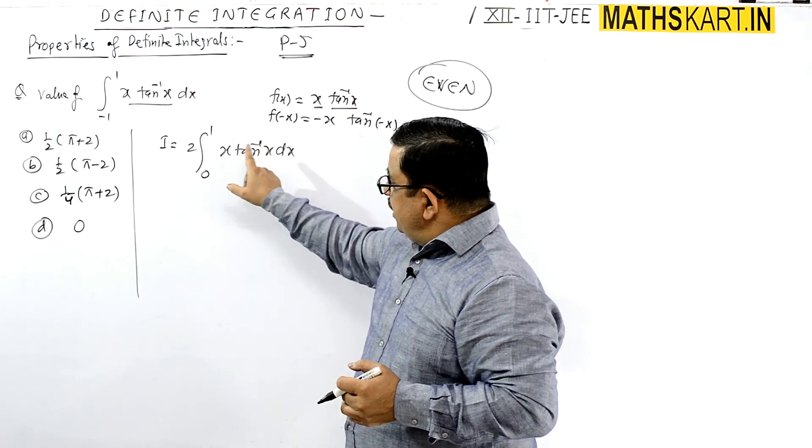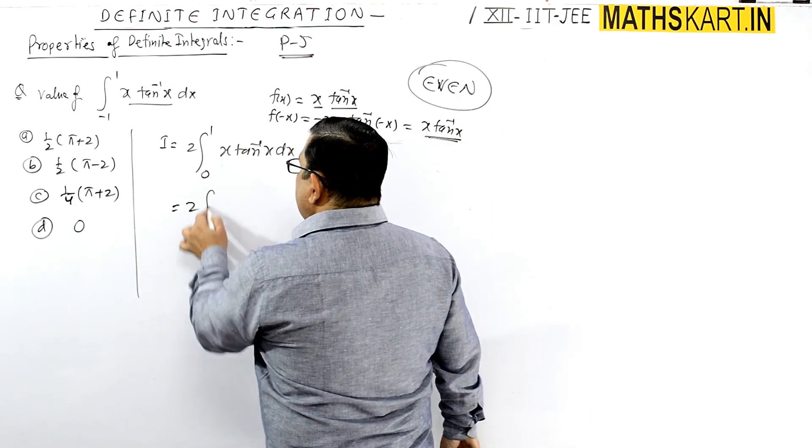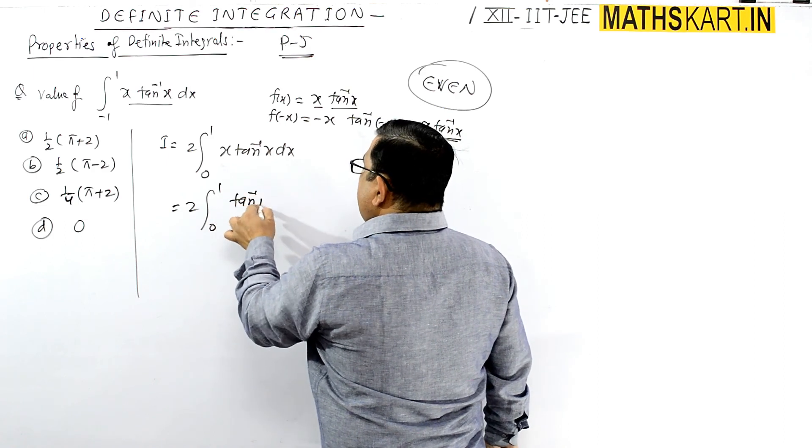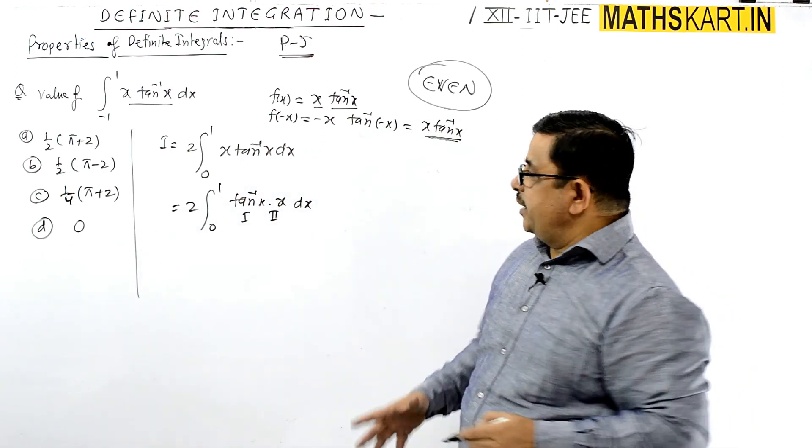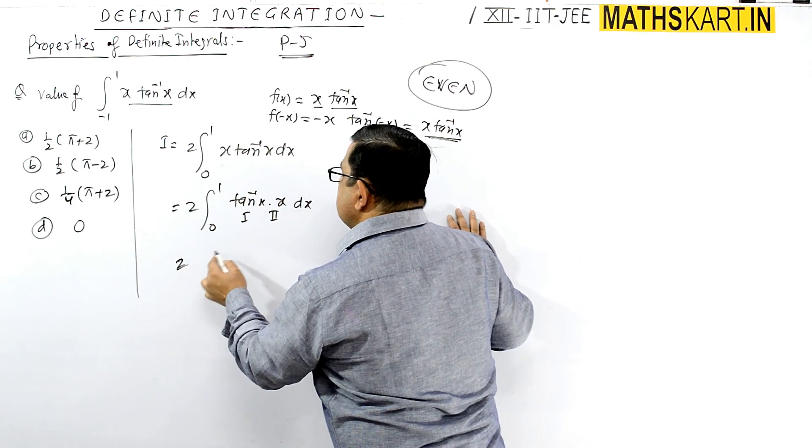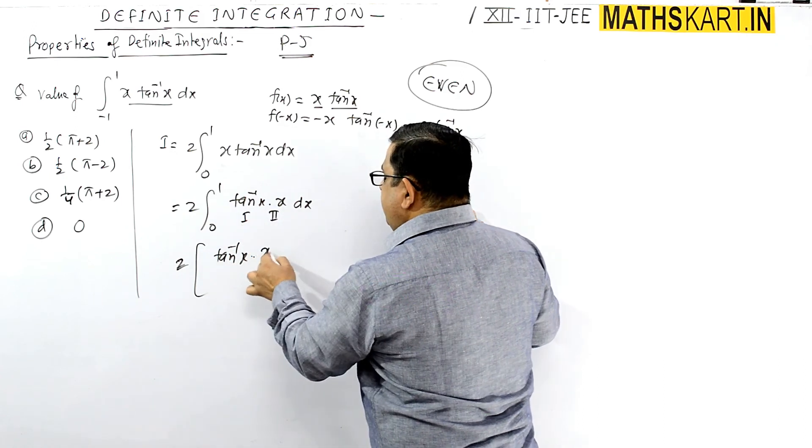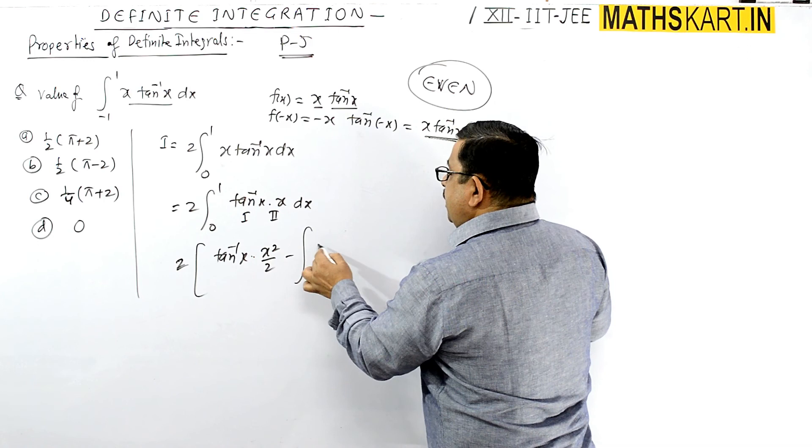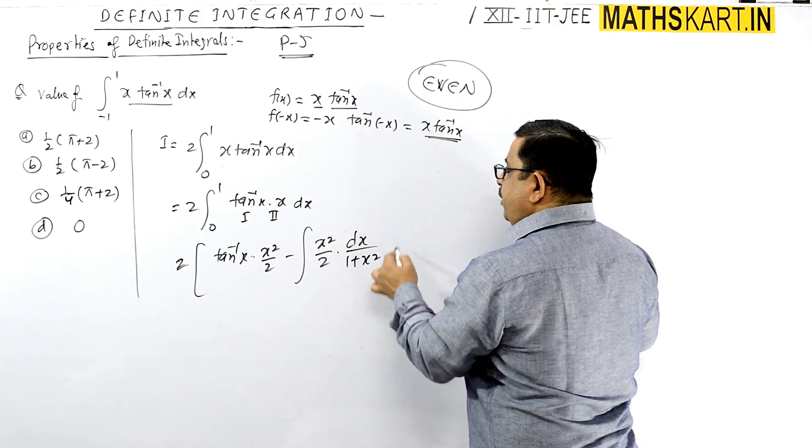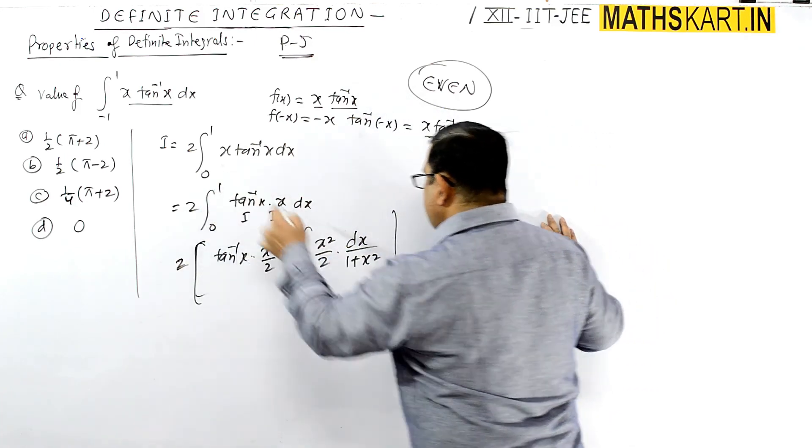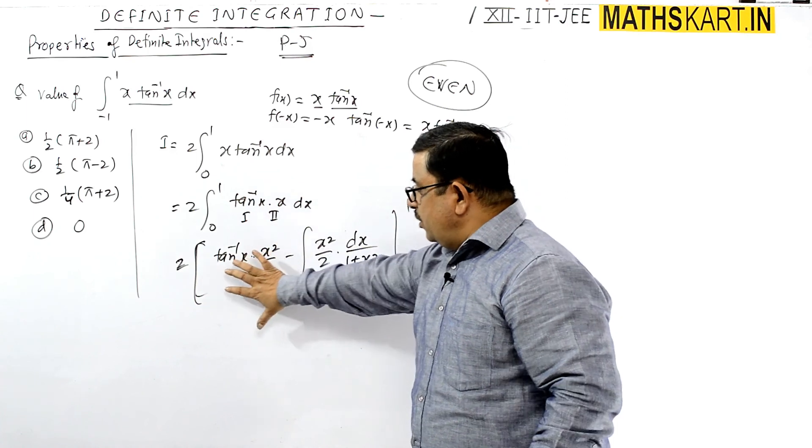For this inverse trigonometric function, take tan inverse x as the first function and x as the second. So it's two times from 0 to 1: tan inverse x times the integration of x, which is x²/2, minus the integral of x²/2 times the derivative of tan inverse x, which is 1/(1+x²), dx.